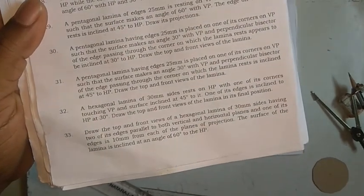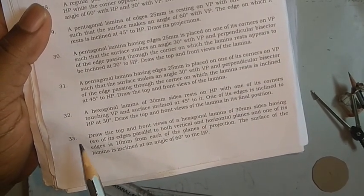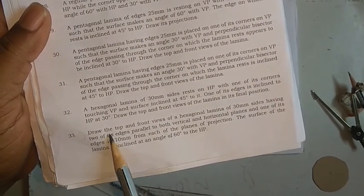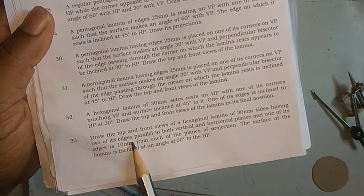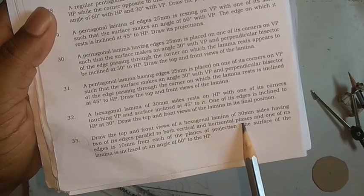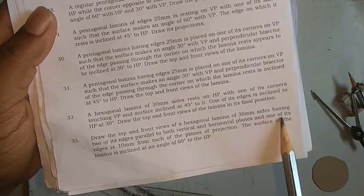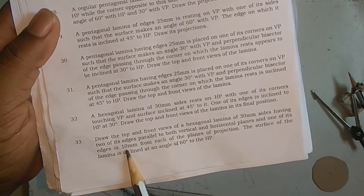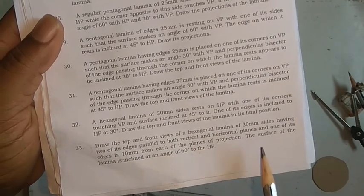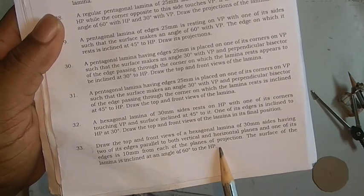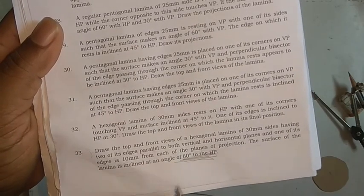Hello friends, here we have number 33. A hexagonal lamina with 30mm sides having two of its edges parallel to both vertical and horizontal planes. One of its edges is 10 millimeters from each of the planes of projection. The surface of the lamina is inclined at 60 degrees to the HP.